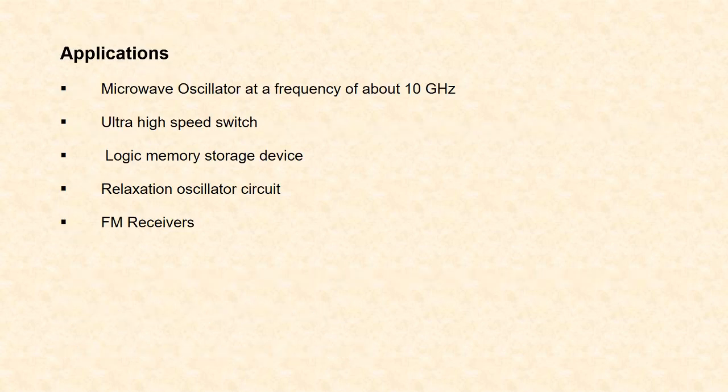Next are the applications of tunnel diode. It is used as a microwave oscillator at a frequency of about 10 GHz. It is used as an ultra high speed switch because of tunneling. It acts as a logic memory storage device. Because of its negative resistance, it is used as a relaxation oscillator circuit. It is also used in FM receivers.